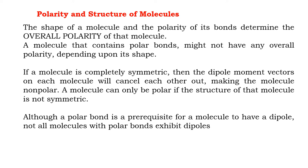Covalent molecules have a certain percentage of ionic character. For any covalent molecule, if there is a charge separation due to electronegativity difference, the molecule is polar and is associated with a dipole moment, which is a vector quantity. When we consider a molecule having more than one bond, we have to consider the polarity of the molecule by considering the dipole moment of all the bonds.